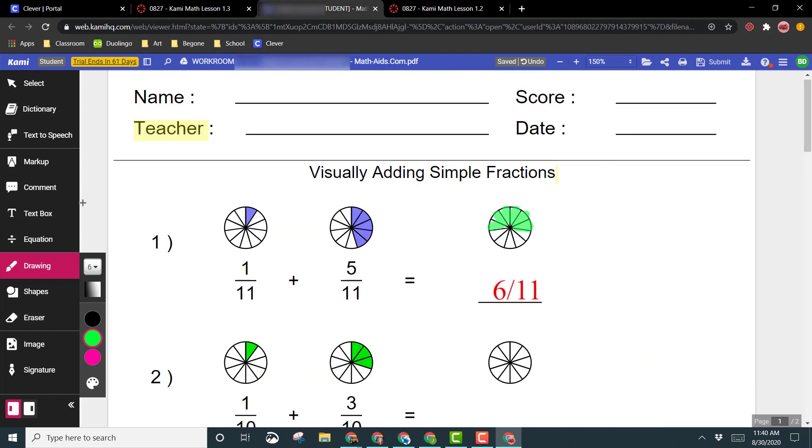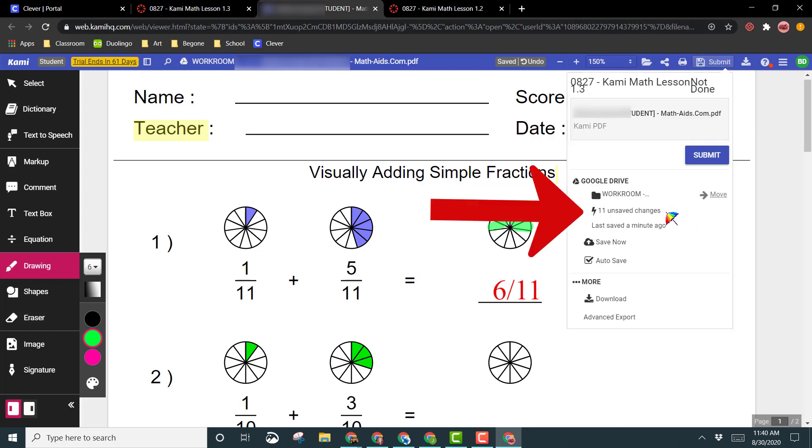So once you are done and you have written and completed the PDF file, now it is time to submit it. In the upper left hand corner, you'll see where it says submit. So you're going to left click on this. You'll notice here that it does say 11 unsaved changes. So I want to make sure that I always click save now just to make sure I'm giving my teacher the newest file. Once I have done that, and I know for sure all changes have been saved, I can now click on submit.